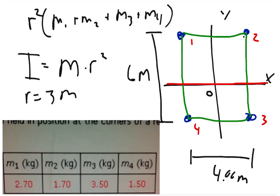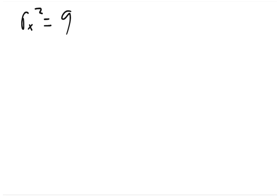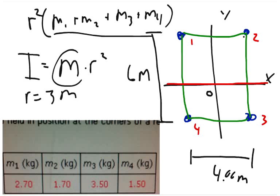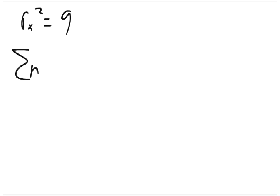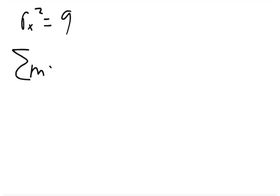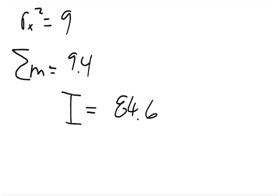So r² equals 9. About the x-axis, r² equals 9. We then sum up the masses from the chart: 2.7 plus 1.7 plus 3.5 plus 1.5. The sum of the masses equals 9.4. So the moment of inertia of the system about the x-axis is 9.4 times 9, which equals 84.6 kg·m².